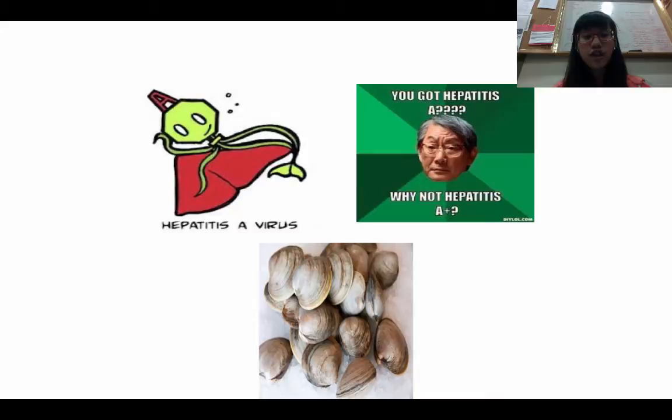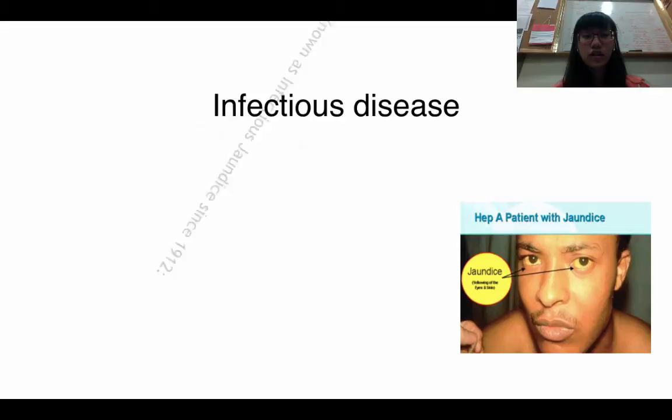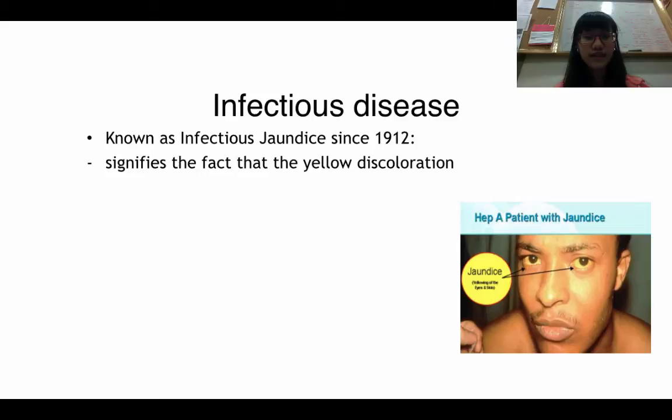You guys usually hear that you can get Hepatitis A from shellfish. This is only partially true — you can get Hepatitis A if the shellfish lives in contaminated water and you don't cook it properly. Hepatitis A is an infectious disease, also known as infectious jaundice since 1912, because it signifies the yellow discoloration. Here you can see a patient with Hepatitis A who has yellow skin and yellow eyes.